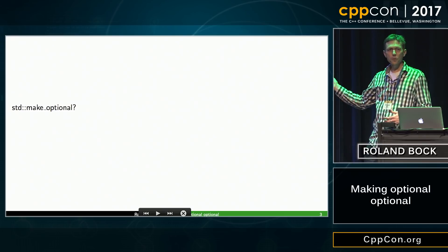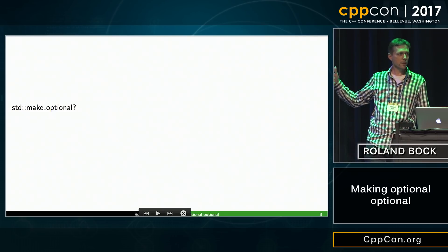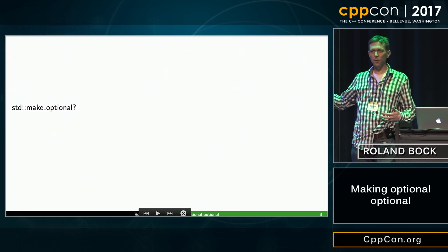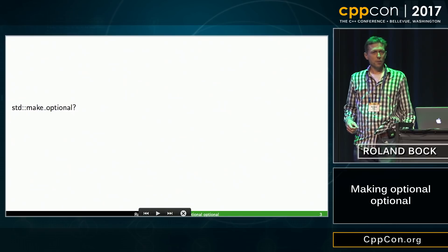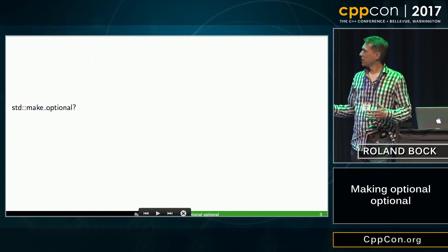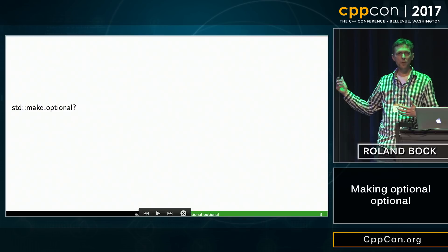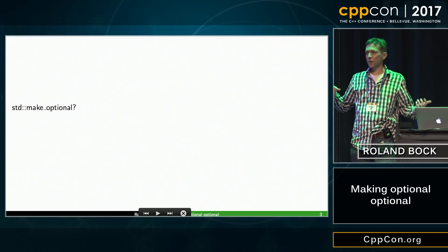So there is a function called makeOptional. That sounds good, that sounds promising, but basically what it does is it's forwarding all the arguments that you give it to the constructor. So you have to choose at compile time whether you construct it with a value or without a value. So it's